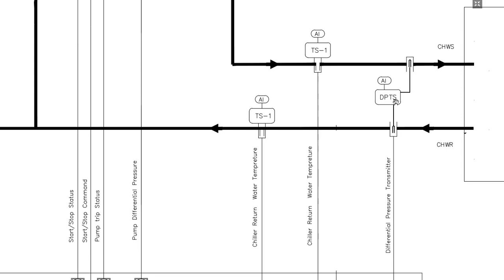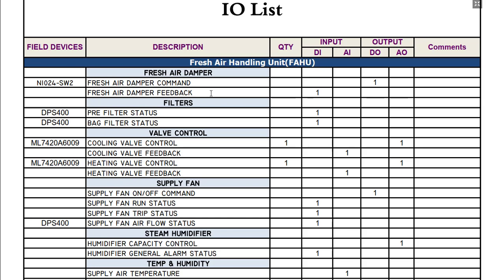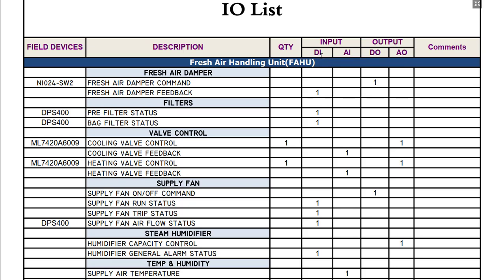That's all for the schematic diagrams. Now we will discuss the IO list for all these equipment. The IO list provides the following information: field devices with model numbers, description of the point, quantity of field devices, DI points, AI points, DO points, AO points, and a comments section. I have made this IO list for the fresh air handling unit we just discussed. This is an actual IO list based on Honeywell products, so all the model numbers shown are from Honeywell.